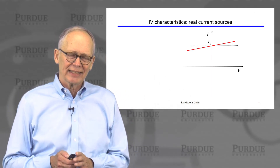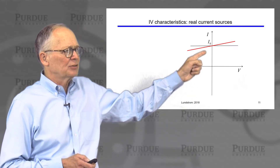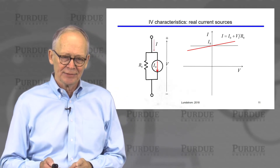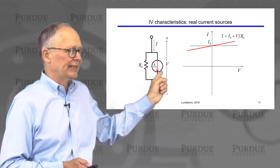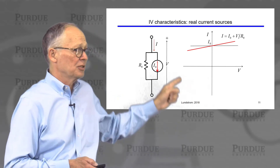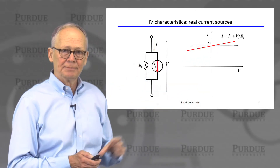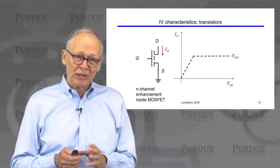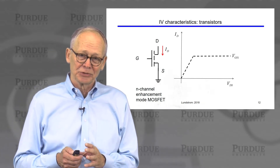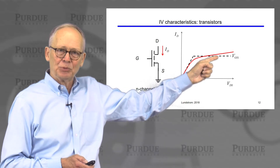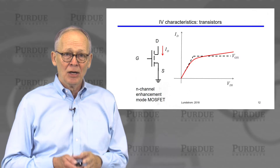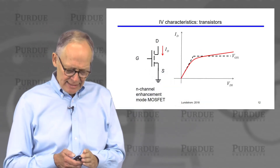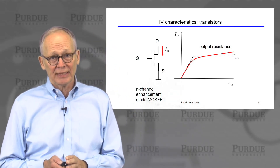We should make these characteristics a little more realistic. Ideal current sources don't occur in practice. In practice, if we apply a little more voltage, we get a little more current. We think about this by modeling it as an ideal current source in parallel with a resistor — so a real current source always has a finite resistance. Similarly, transistors don't behave as ideal current sources; they'll behave like a current source with some output resistance, and hopefully in a good transistor that slope will not be very large.